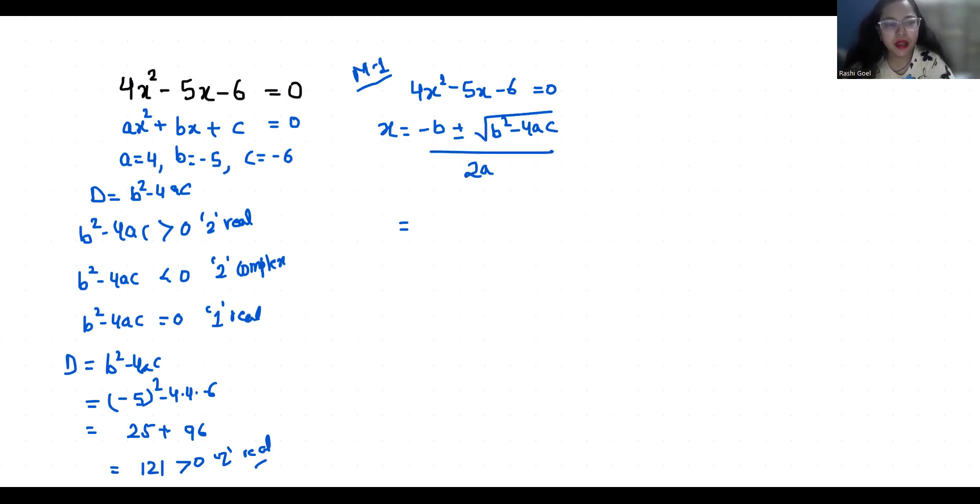So, x = -(-5) ± √121 by 2 times 4. We already found the value of b² - 4ac, that is 121. So, 5 ± 11 by 8, which equals x₁ = (5 + 11) / 8 = 16 / 8 = 2.